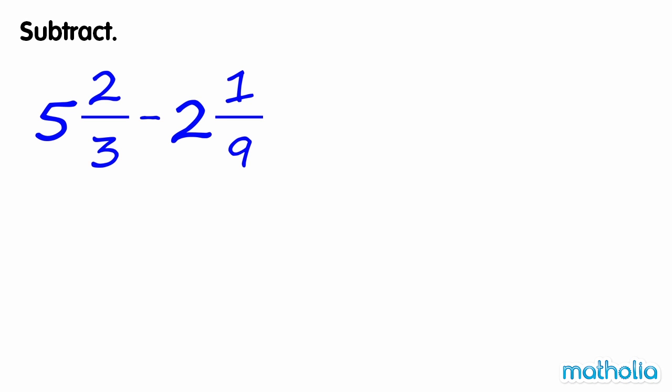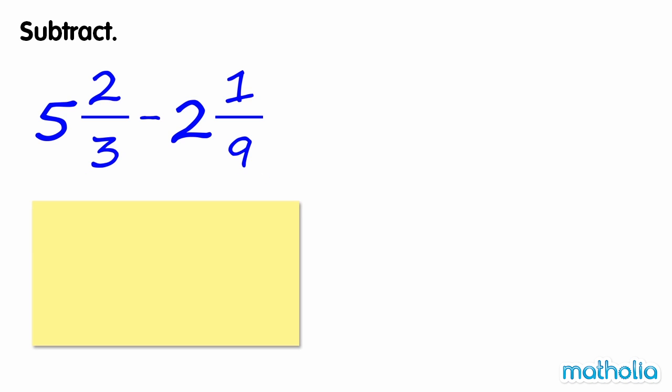Subtract. Let's find 5 and 2 thirds minus 2 and 1 ninth. The denominators of the fractions are not the same, so we need to find an equivalent fraction of 2 thirds where the denominator is 9.